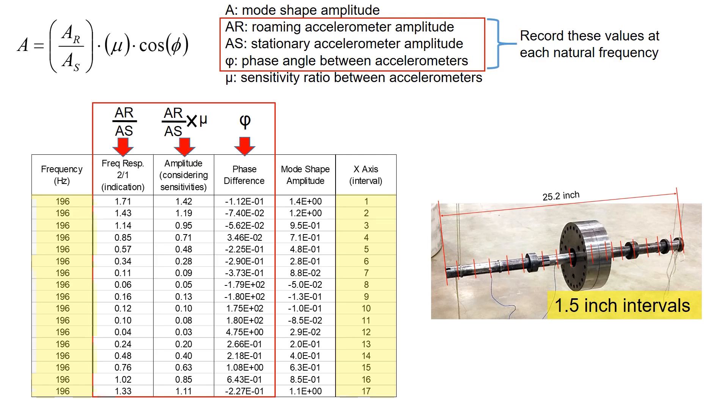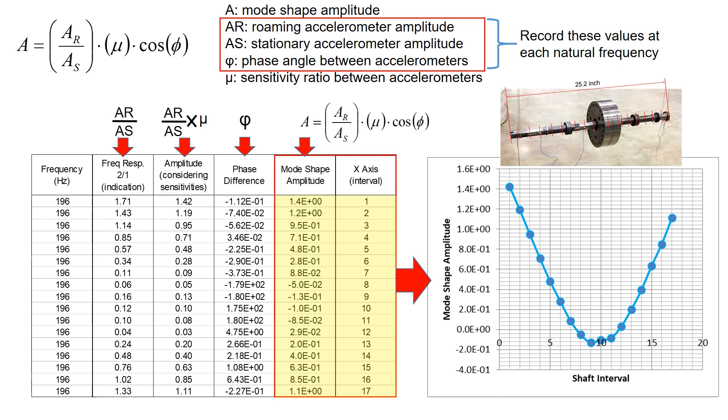Now, if you multiply all the recorded data, you will get the mode shape amplitude. If you plot this amplitude versus the intervals, you will get the mode shape for the first natural frequency at 196 Hz.